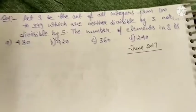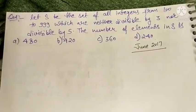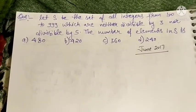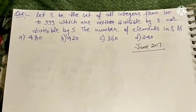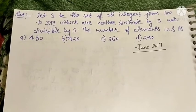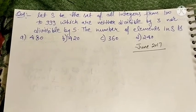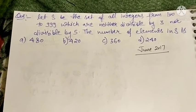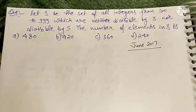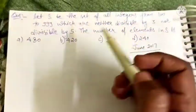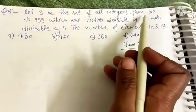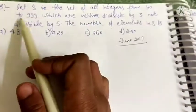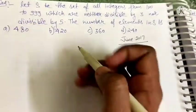Let S be the set of all integers from 100 to 999 which are neither divisible by 3 nor by 5. The number of elements in S is equal to what? S is the set of integers from 100 to 999.